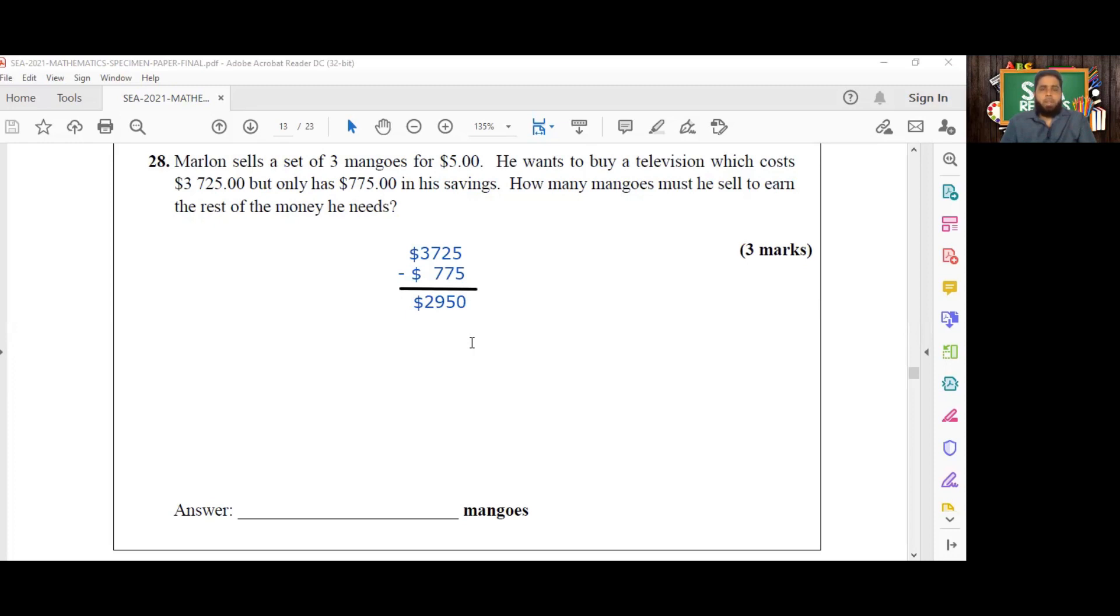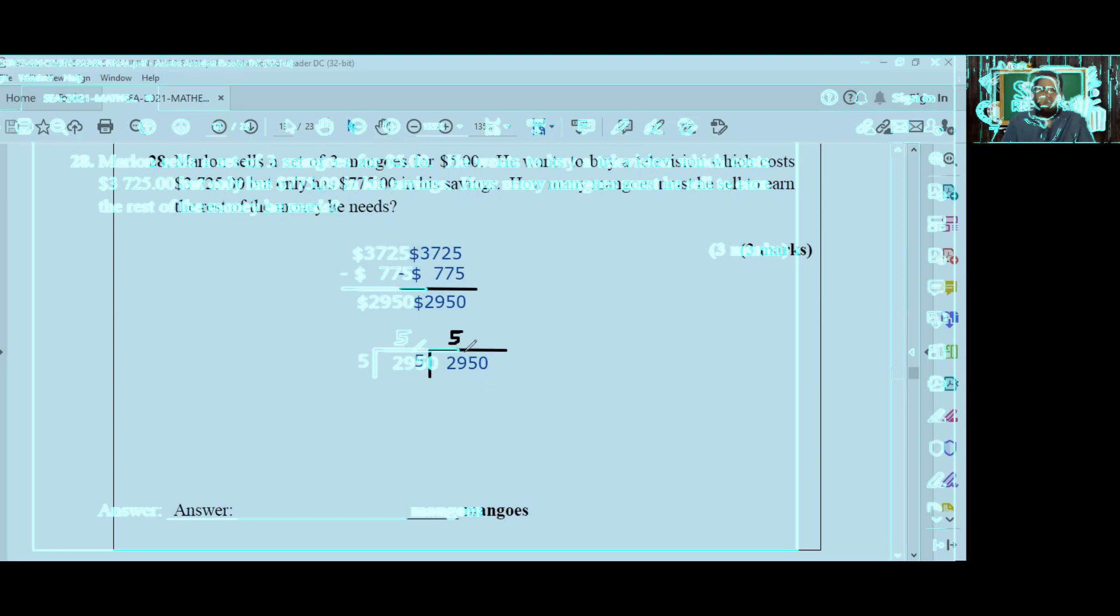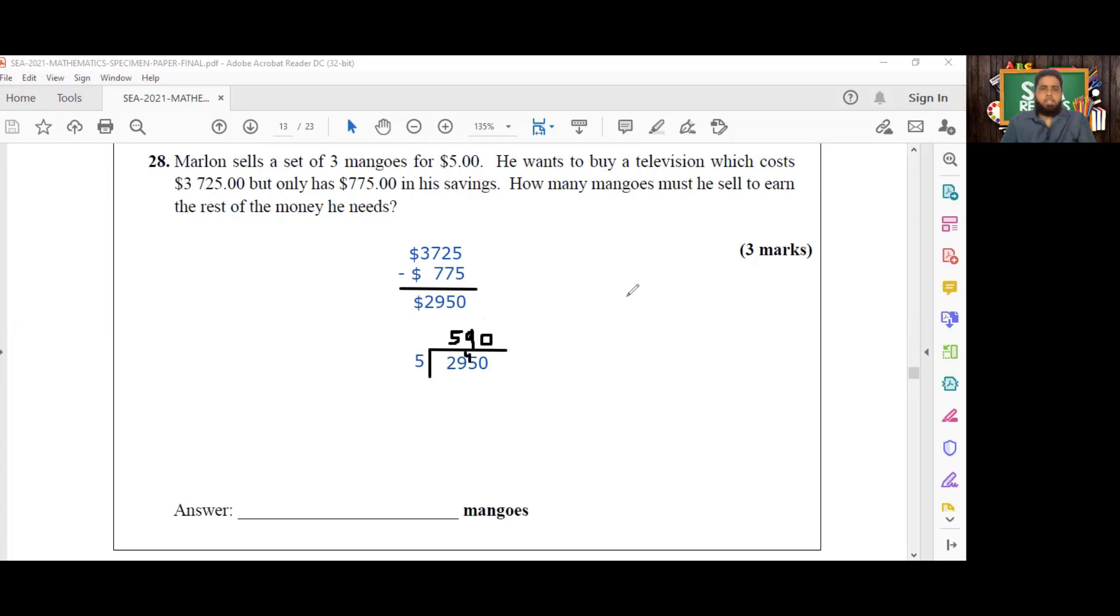Now, he sells three mangoes for $5. So $2,950 is nicely divisible by five. So if we were to divide that number by five, then that would give us the amount of sales that he would have to make in mangoes. And then we can translate that into the number of mangoes itself. This is going to give us 590 sets of mangoes, because he sells three mangoes in a set for $5.